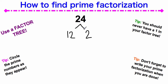The number 2 is a prime number, so when I get to a prime number, I'm just going to circle it. I'm going to circle the number 2. Remember, it's prime because it only has two factors: the number 1 and itself.